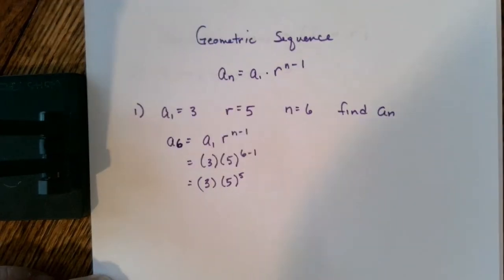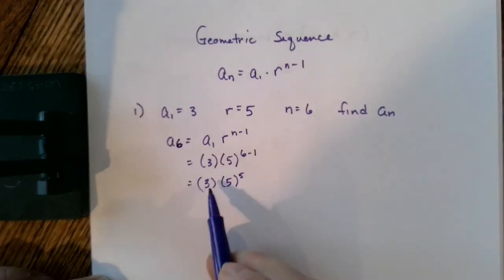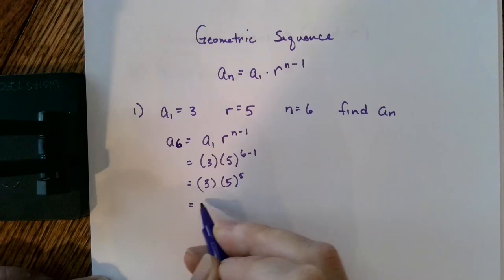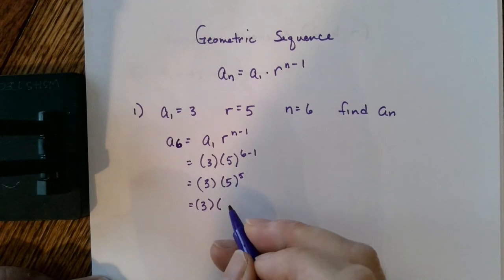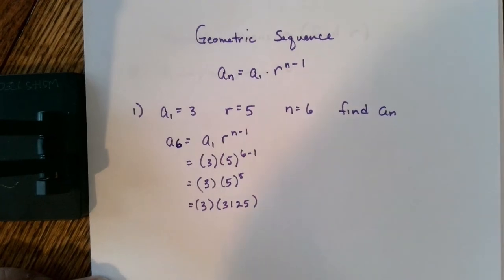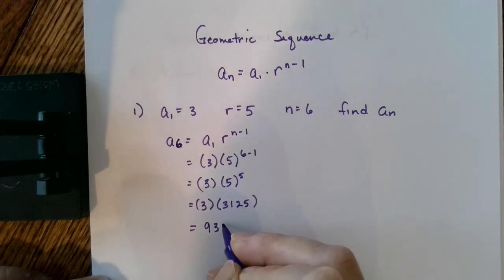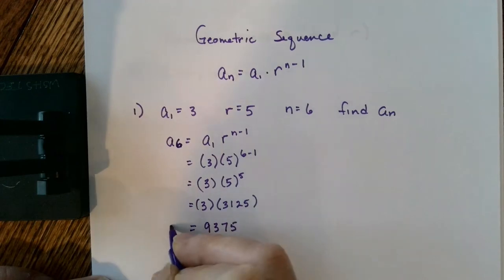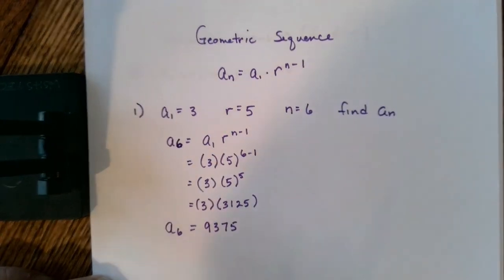So, this will become 3 times 5 raised to the fifth power. Now again, you may need your calculator to do these calculations. Well again, I'm not going to multiply the 3 and the 5 together. Instead, I'm going to keep the 3 and 5 raised to the fifth power as 3,125. Now I can multiply the 3 times 3,125 and I end up with 9,375. So, the sixth term of the sequence has a value of 9,375.